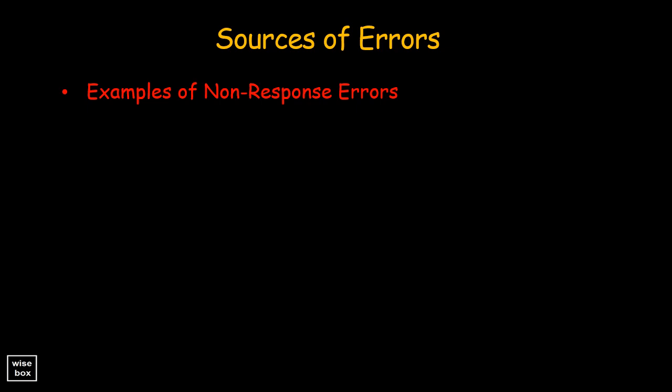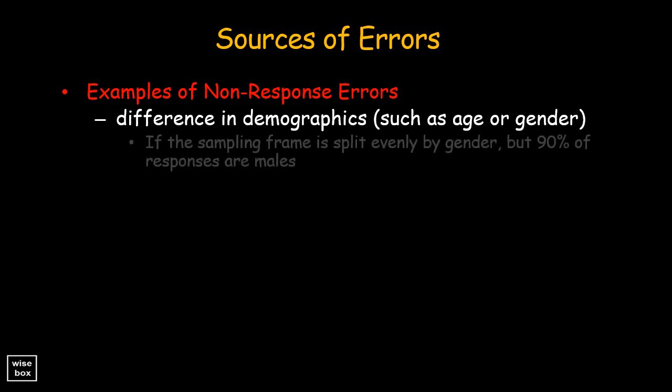Here are some examples of non-response errors. It occurs when there are differences in demographics such as age or gender. If the sampling frame is split evenly by gender but 90% of responses are males.